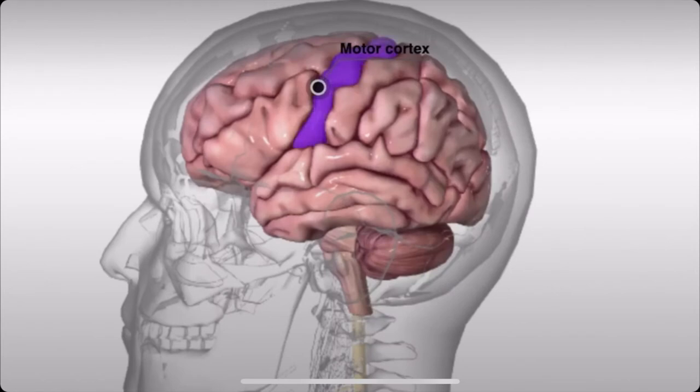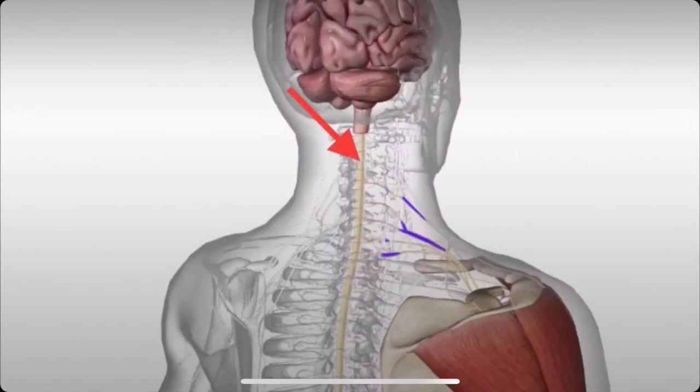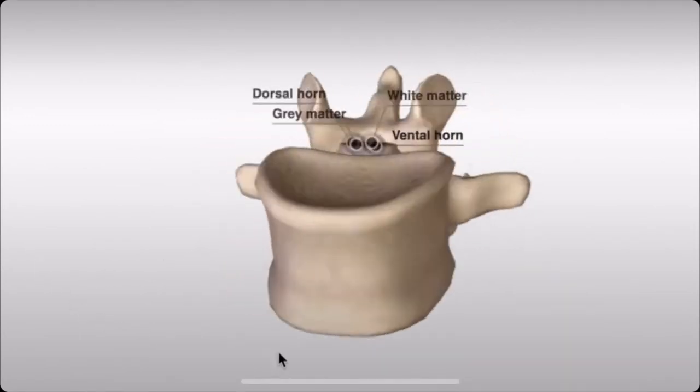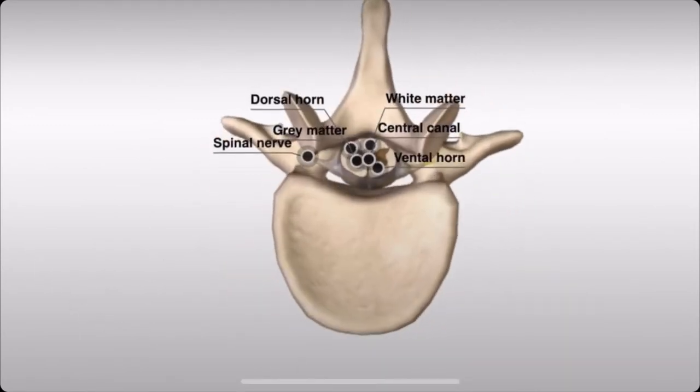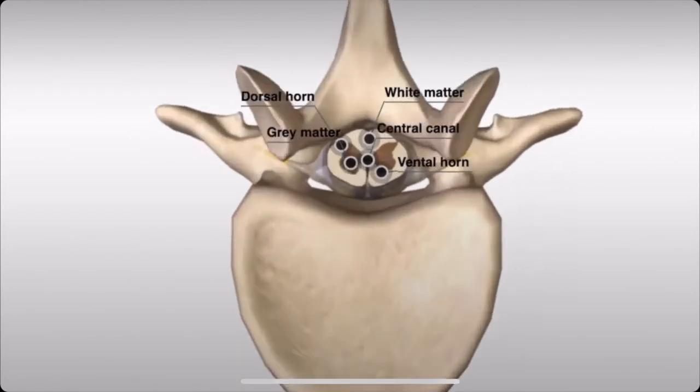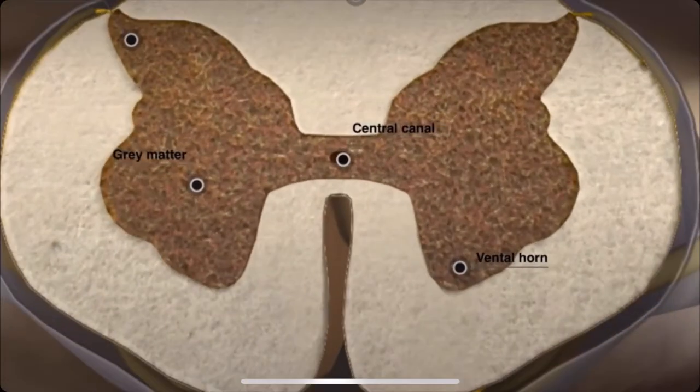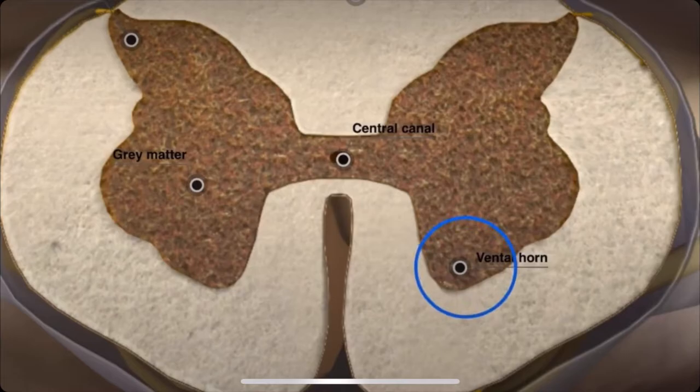The signal travels from the motor cortex down the spinal cord. The nerves that send signals to your muscles have cell bodies that originate in the ventral horn of your spinal cord.